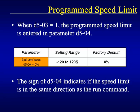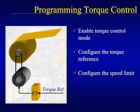Parameter D504 is the value used as the speed limit when parameter D503, speed limit selection, is set to setting 1. The speed limit is programmed in percentage of the maximum frequency set in parameter E104. The polarity of the speed limit is used to indicate the direction of the speed limit. If the speed limit is positive, the speed limit is in the same direction as the run command, and is in the opposite direction of the run command when the speed limit is negative. This completes setting up the speed limit and thus completes programming torque control in the F7.